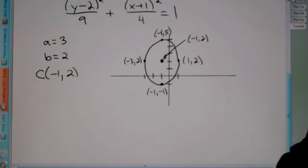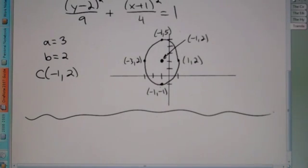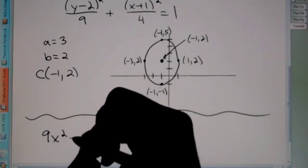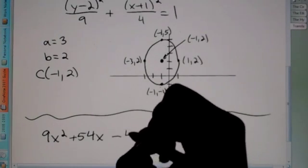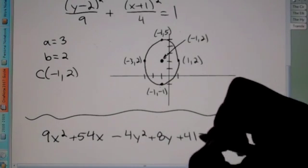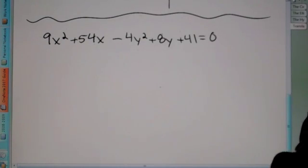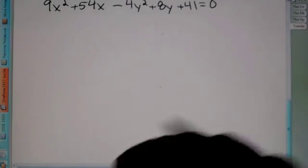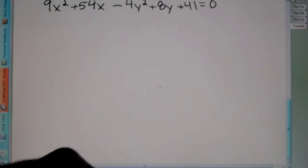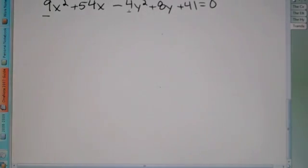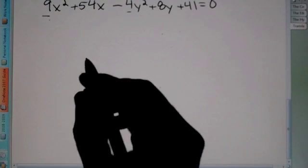Okay? So let's do another one. But this one actually, we're going to have to do a little bit more work to solve this. So we have 9x squared, plus 54x, minus 4y squared, plus 8y, plus 41 equals 0. Okay, this problem is going to be pretty tough. I'm not going to lie, it's going to take quite a few steps.